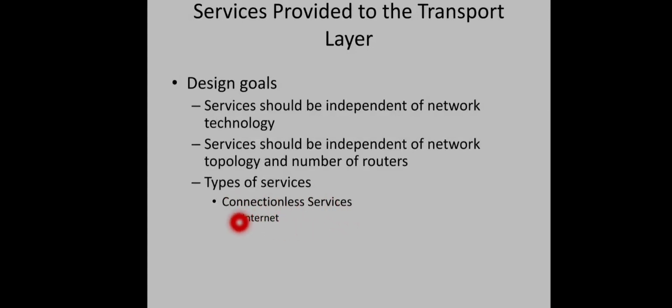The best example of a connectionless service network is the internet itself. In this, there is no packet ordering or flow control in the network — those are left to the host machines. In the case of connectionless service, each packet should carry the full destination address since each one is forwarded independently along different routes. The second team, represented by telecommunications and telephone companies, argued that the subnet should provide reliable connection-oriented service, and that quality of service is the dominant factor — without connections in the subnet, quality of service is very difficult to achieve.